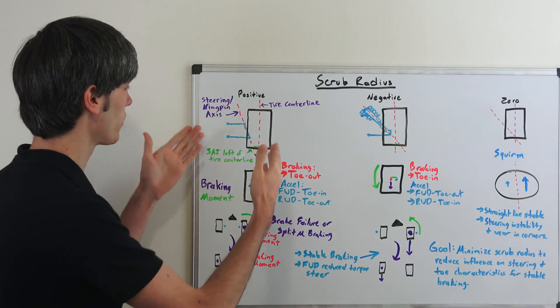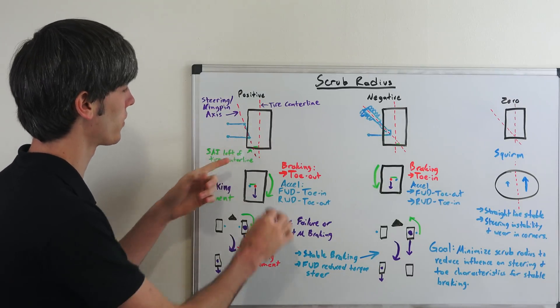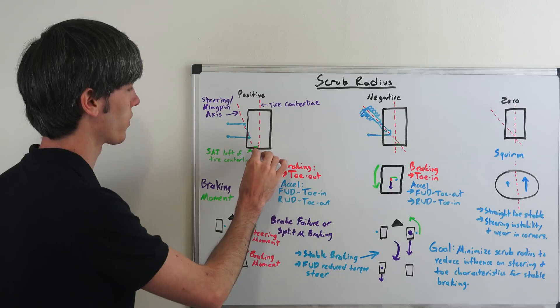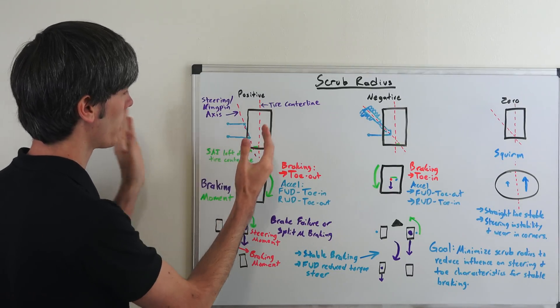So what it is, is essentially the distance between where the steering axis or kingpin axis intersects the ground versus where the tire center line intersects the ground. So if this axis intersects the ground to the left of the tire center line...